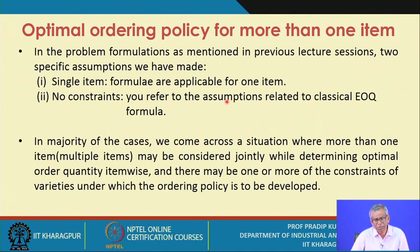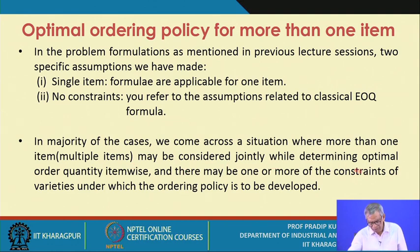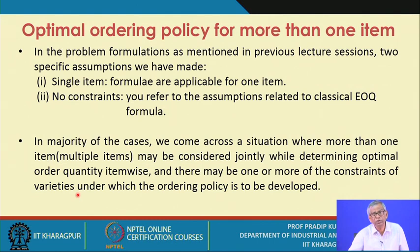We will now relax these assumptions one by one. First, we will assume that constraints of different types are present, and examine what the modified EOQ expression will be. In the majority of cases, more than one item — multiple items — may be considered jointly while determining the optimal order quantity item-wise.